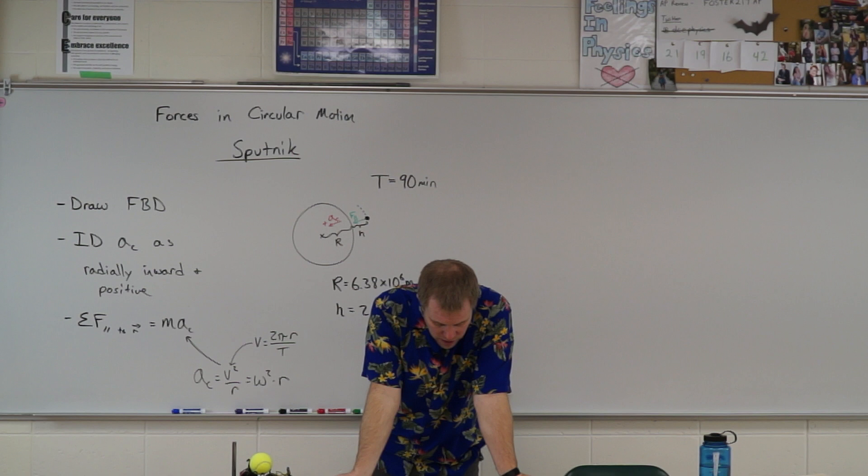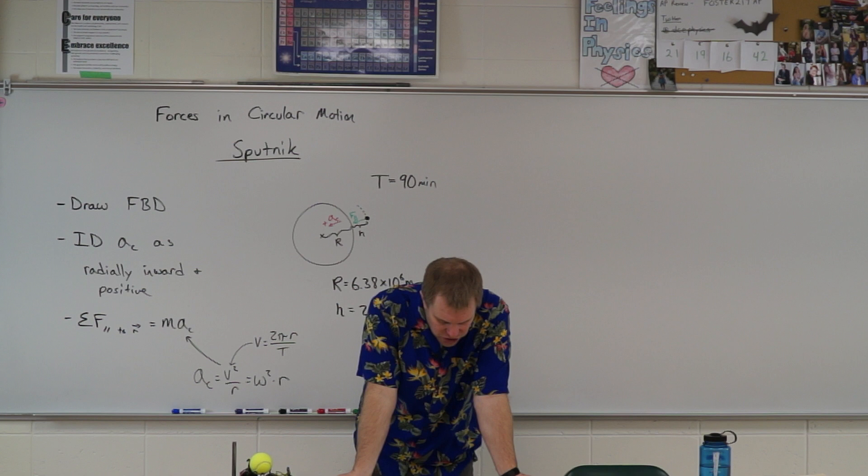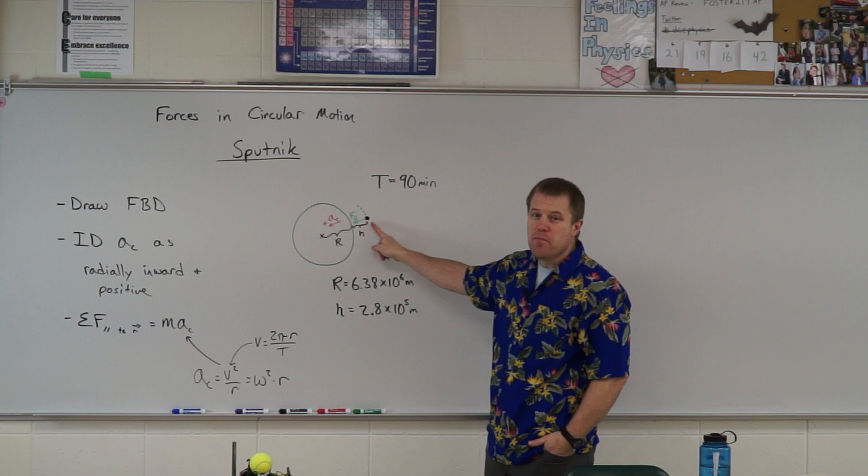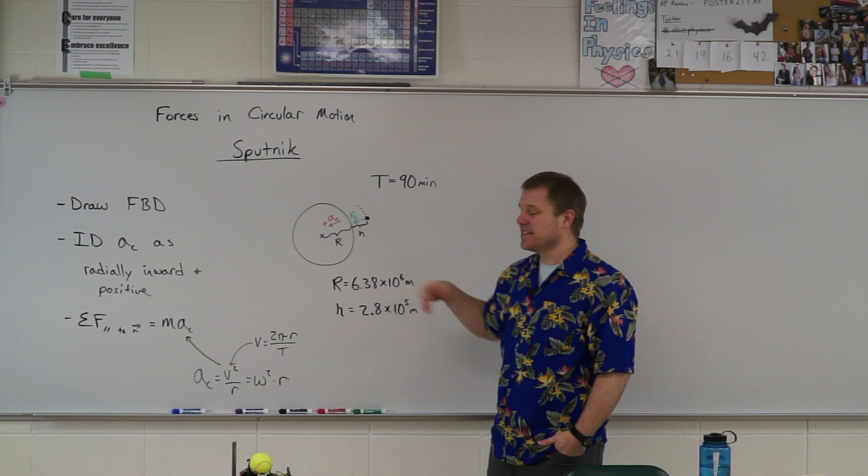The radius of the Earth is 6.38 times 10 to the 6th meters. What is the tangential speed required to get Sputnik to orbit? So how fast is Sputnik moving out there? And so why was that so difficult to get a satellite into orbit? Well, it has a lot to do with that speed.